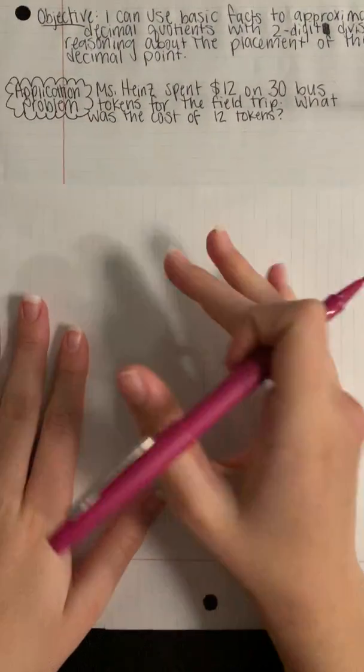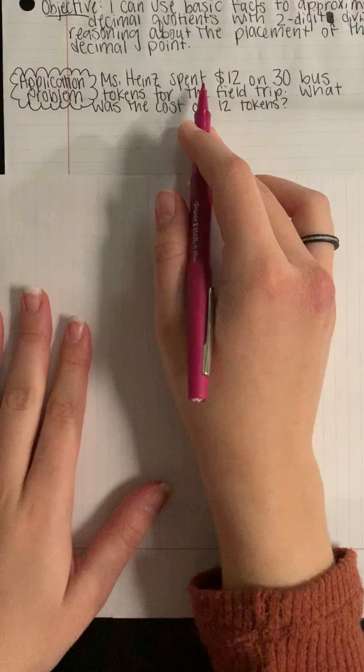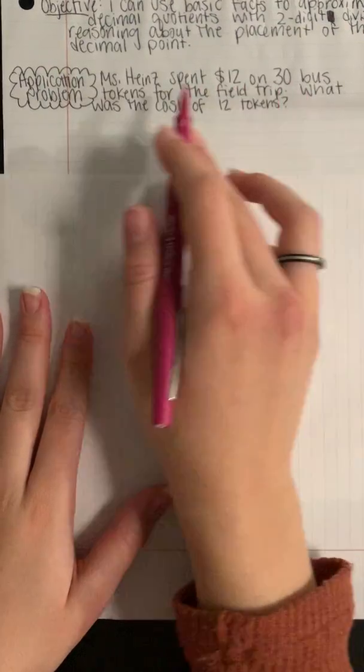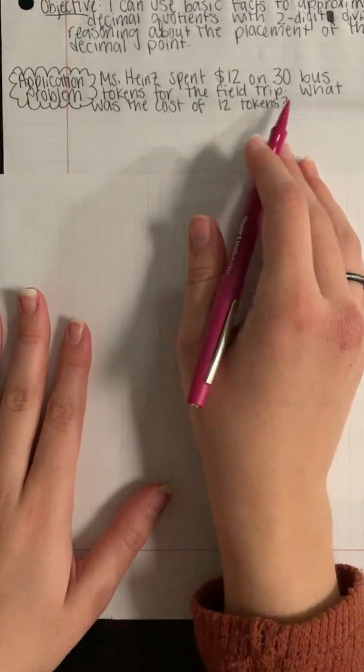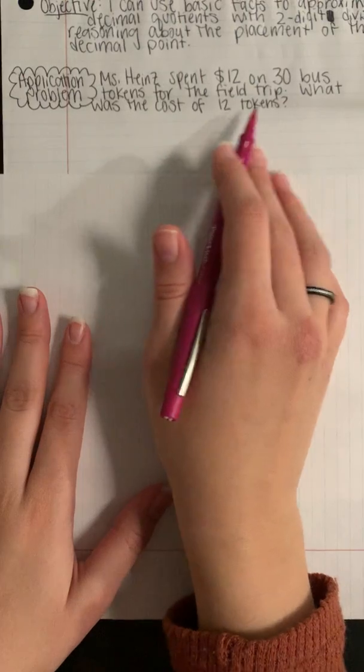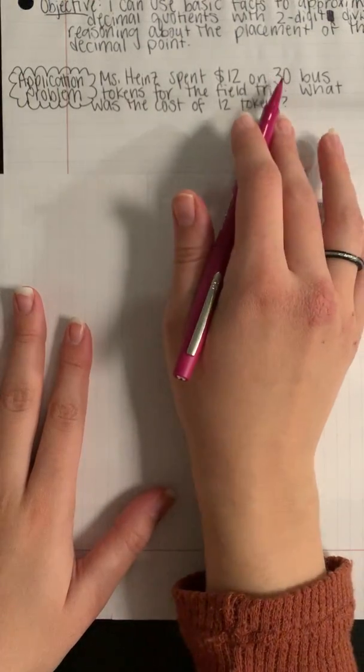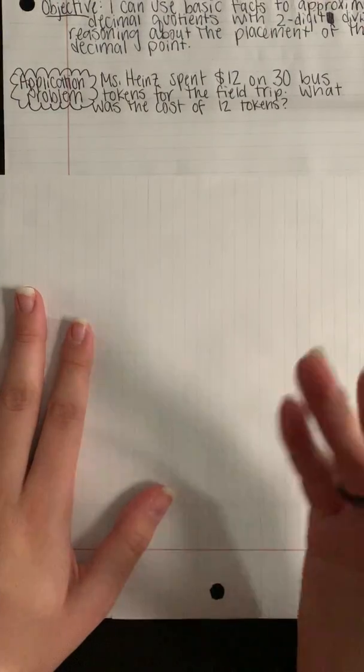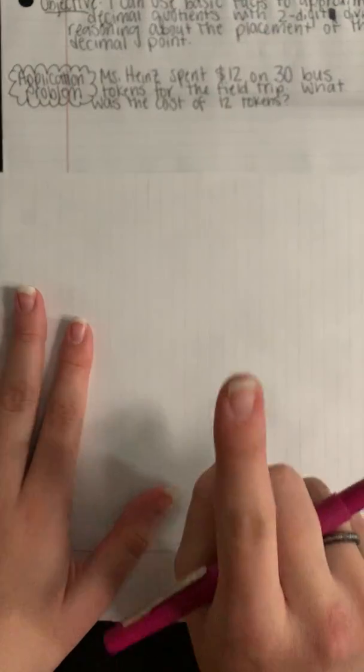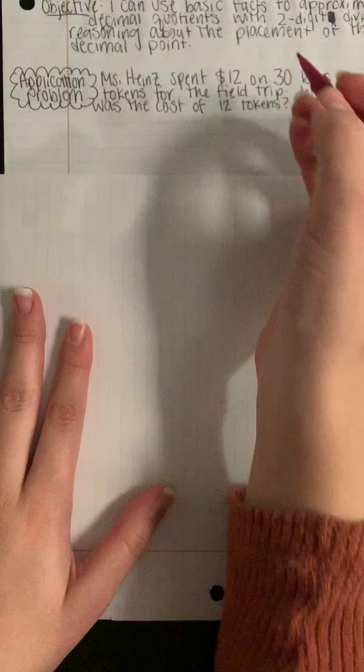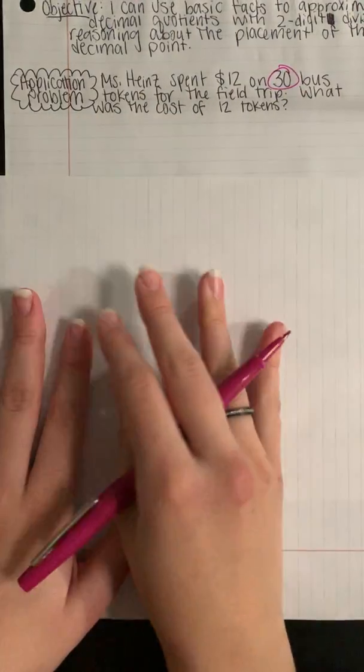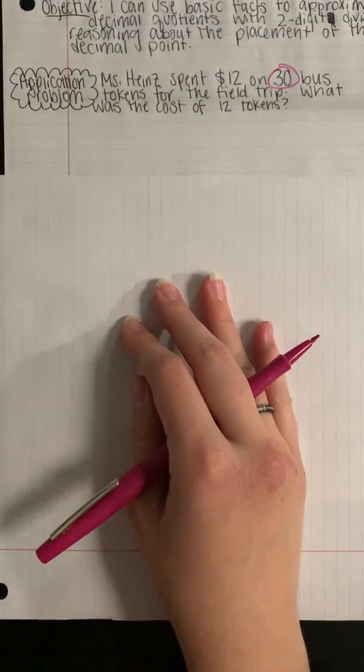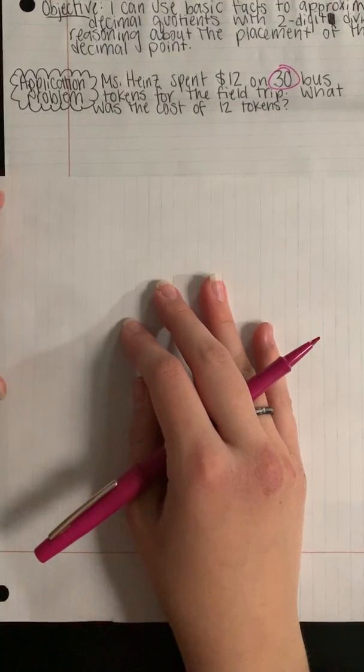So to start off, let's try an application problem that involves a little bit of problem solving also. Miss Hines spent $12 on 30 bus tokens for the field trip. What was the cost of 12 tokens instead of all 30? The first step in this problem is to find out how much she spent on just one token. We know that she bought 30, but I need to find out how much she spent on one in order to figure out how much she spent on 12.